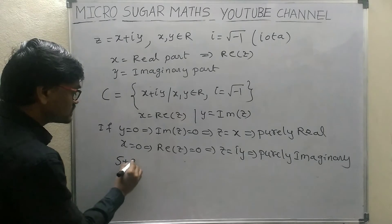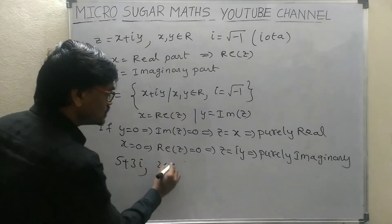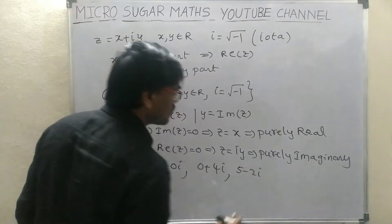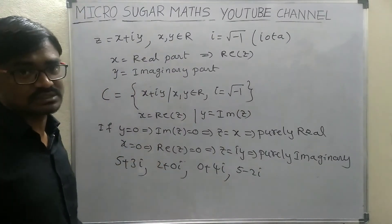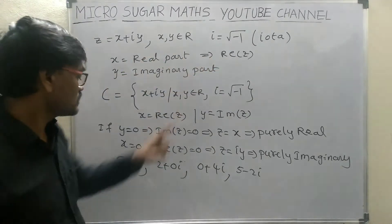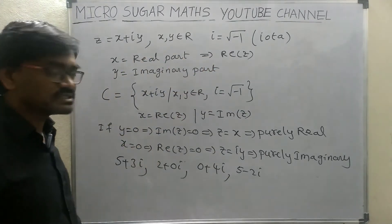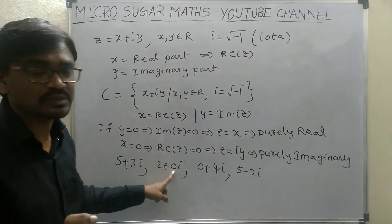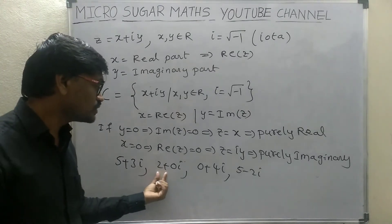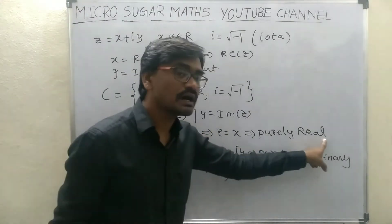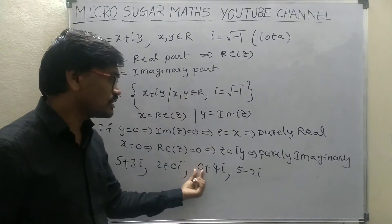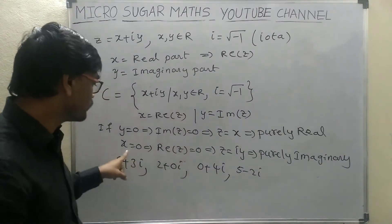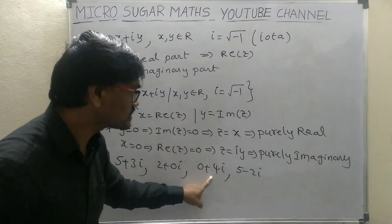The examples are: complex numbers 5 plus 3i, 2 plus 0i, 0 plus 4i, and 5 minus 2i. Here 5 is the real part and 3 is the imaginary part. Here 2 is the real part and 0 is the imaginary part — since the imaginary part is 0, 2 plus 0i is called purely real. Here the real part is 0 and imaginary part is 4i, so since X equals 0, this complex number is purely imaginary.